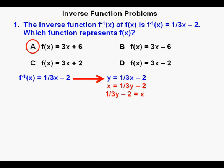So we have (1/3)y - 2 = x. Next we add two to both sides of the equation. Negative two plus two cancel on the left side of the equation. We bring down (1/3)y = x + 2. Then we solve for y by multiplying the whole equation by three. That leaves us with y = 3x + 6, and that's again our answer A.